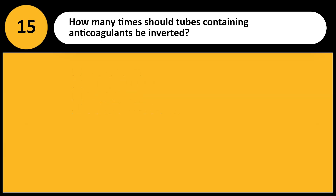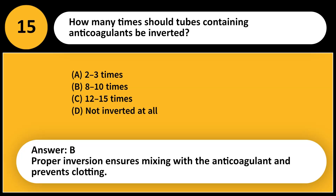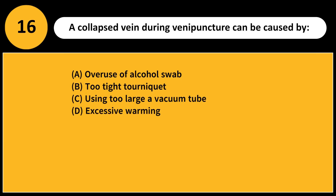How many times should tubes containing anticoagulants be inverted? A. 2 to 3 times. B. 8 to 10 times. C. 12 to 15 times. D. Not inverted at all. Answer: B. Proper inversion ensures mixing with the anticoagulant and prevents clotting.